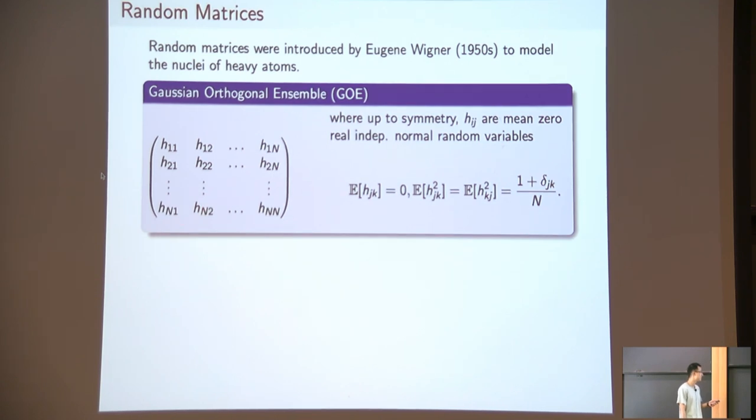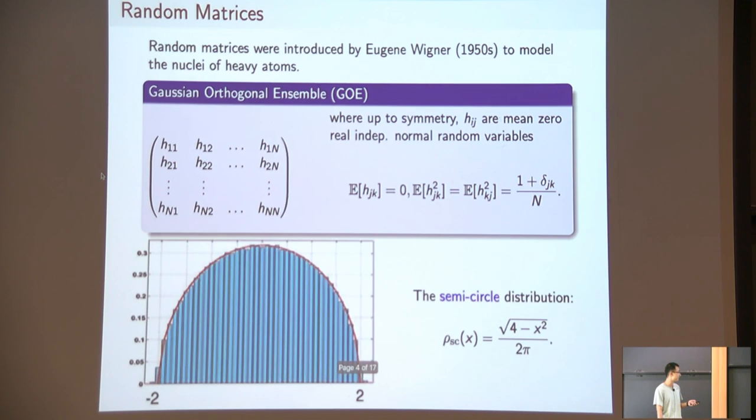Because this is a symmetric matrix, all the eigenvalues are real. So if you plot the histogram of its eigenvalues, you get this famous semicircle distribution. All the eigenvalues roughly are supported on the interval from minus two to two, and the density of the eigenvalues form this semicircle.